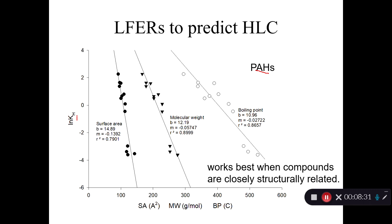Here's some more examples. Here's a bunch of PAHs — we're predicting their Henry's Law constants as a function of surface area, molecular weight, or boiling point. Surface area gives an R² of 0.79. Molecular weight gives about 0.9. Boiling point gives 0.8657. These are reasonably good ways of estimating Henry's Law constant as long as you have structurally very similar compounds. But you would not want to use these equations to predict the Henry's Law constant of dioxins, because those are a whole different thing. You have to be very careful not to use these equations to predict things they're not intended to predict.